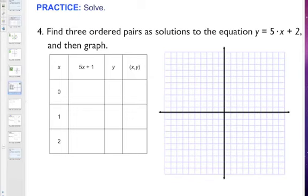All right, now it's your chance. We formatted this table in class as part of our note setup, and I gave you a grid to tape in so you can graph. So what we want you to do is find three ordered pairs as solutions to the equation y equals 5 times x plus 2, and then graph it. Press play when you're ready to check your work.